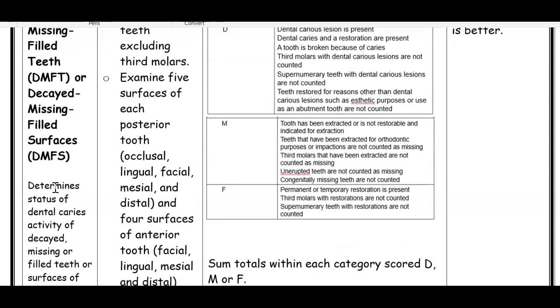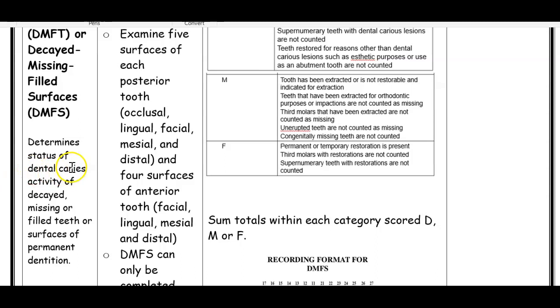So what this does, it determines the status of dental caries. It determines how much caries someone has, and it's looking at how much decayed teeth you have, how much teeth you have missing due to cavities. So again, missing teeth are not those that have been extracted for ortho purposes or wisdom teeth extracted. These missing teeth are extracted due to caries. So the cavity was so bad that the tooth had to be extracted. And then filled teeth are those that have restorations like composite or amalgam.